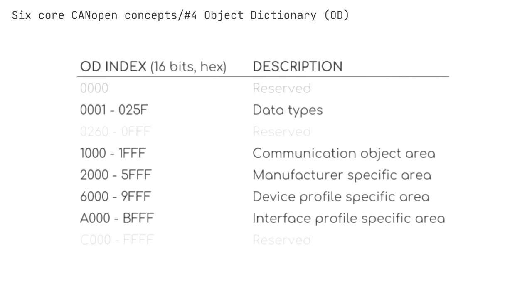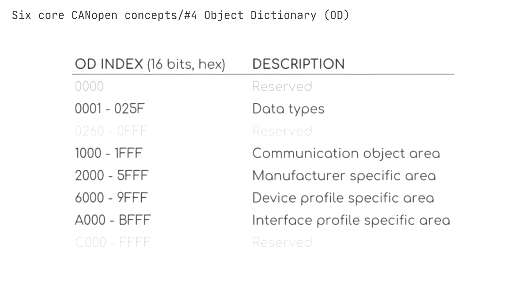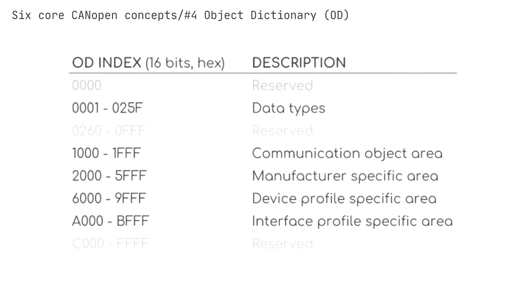The object dictionary is split into standardized sections where some entries are mandatory and others are fully customizable. Importantly, OD entries of a device — for example a slave — can be accessed by another device — for example a master — via CAN using SDOs. This might let an application master change whether a slave node logs data via a specific input sensor, or how often the slave sends a heartbeat.